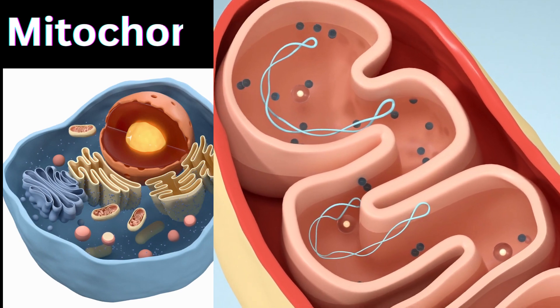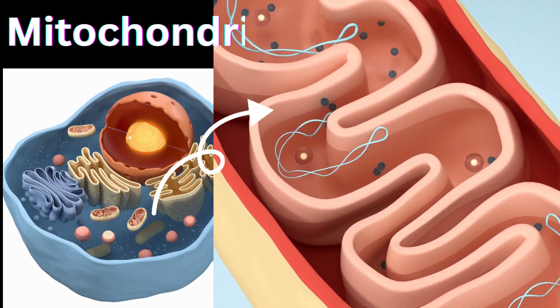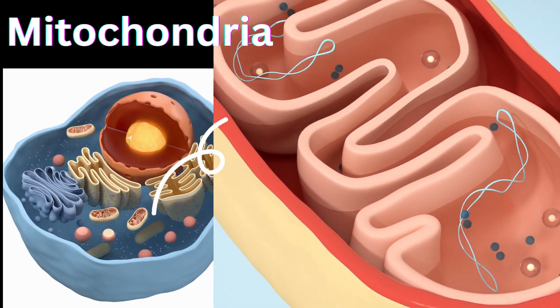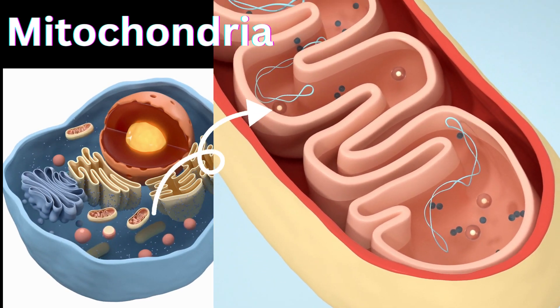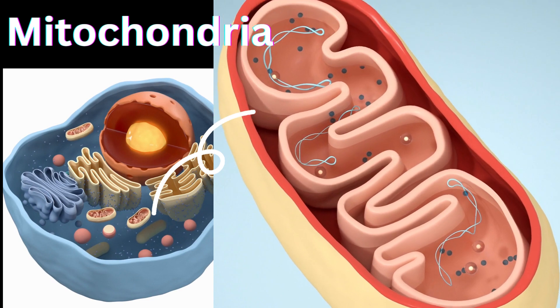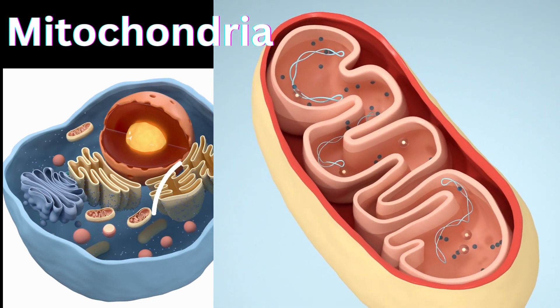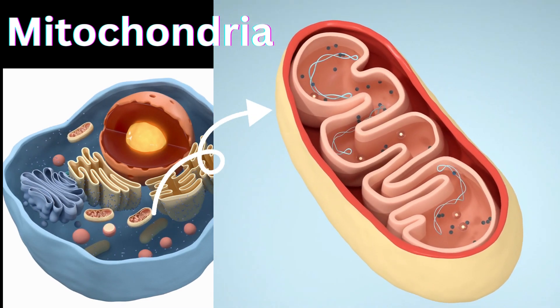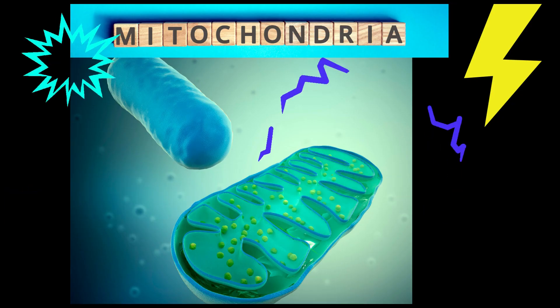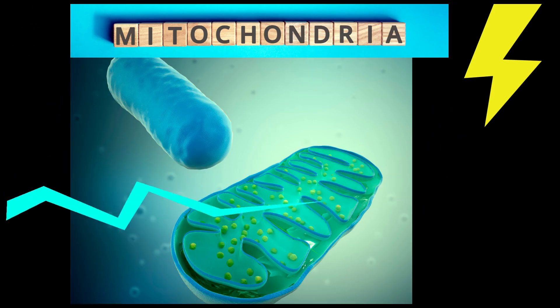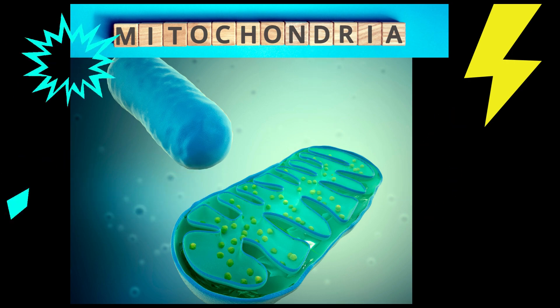Mitochondria are known as the powerhouses of the cell. They contain enzymes for aerobic respiration, and this is where most energy is released from respiration.